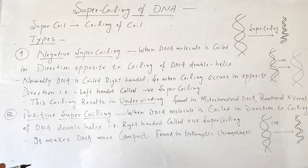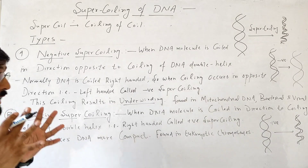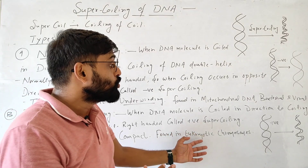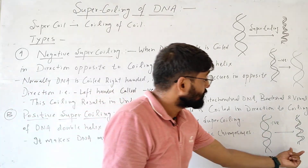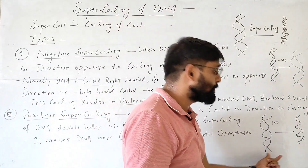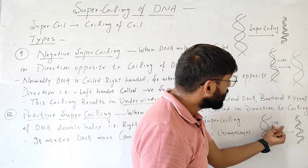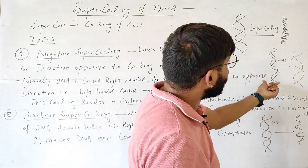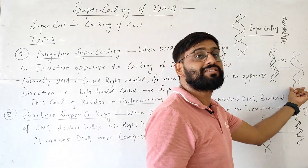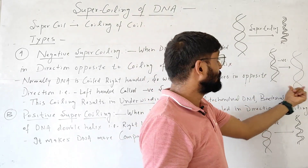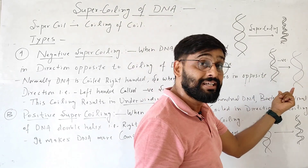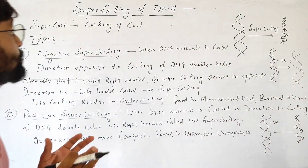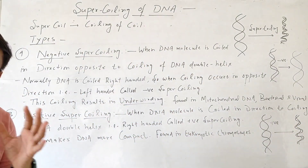This type of coiling makes DNA more compact and it is found in eukaryotic chromosomes. So this DNA is more compact because there is positive supercoiling, and in that case this DNA is in a relaxed state compared to it because there is negative supercoiling. So this is supercoiling of DNA. Thank you.